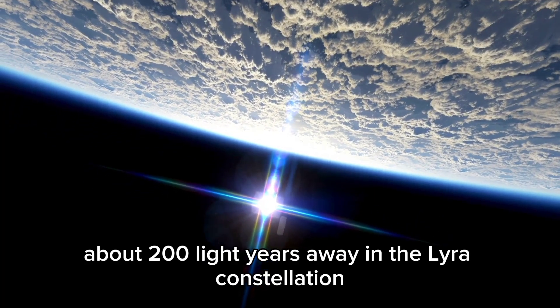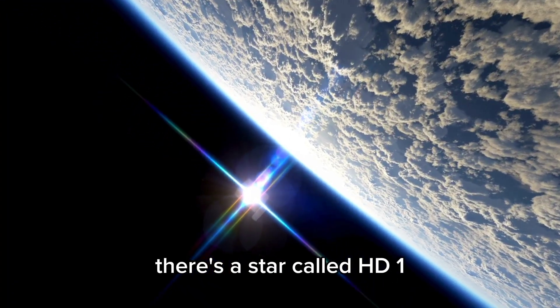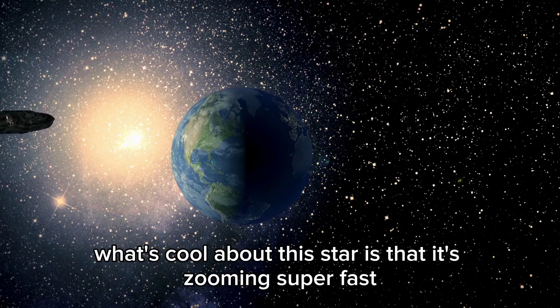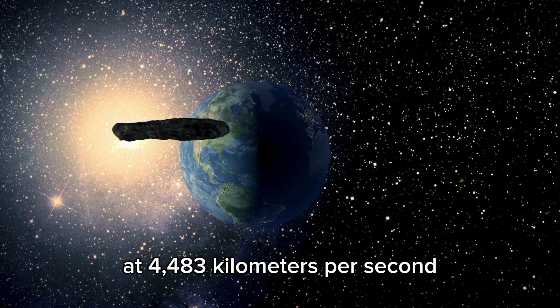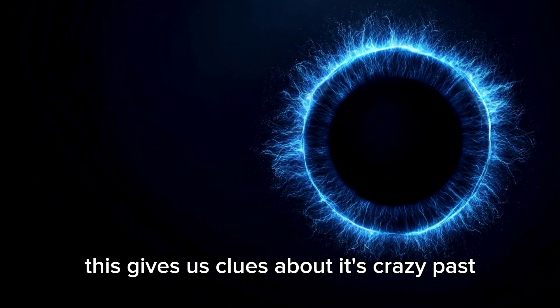About 200 light years away, in the Lyra constellation, there's a star called HD 14283. What's cool about this star is that it's zooming super fast at 4,483 kilometers per second. This gives us clues about its crazy past.